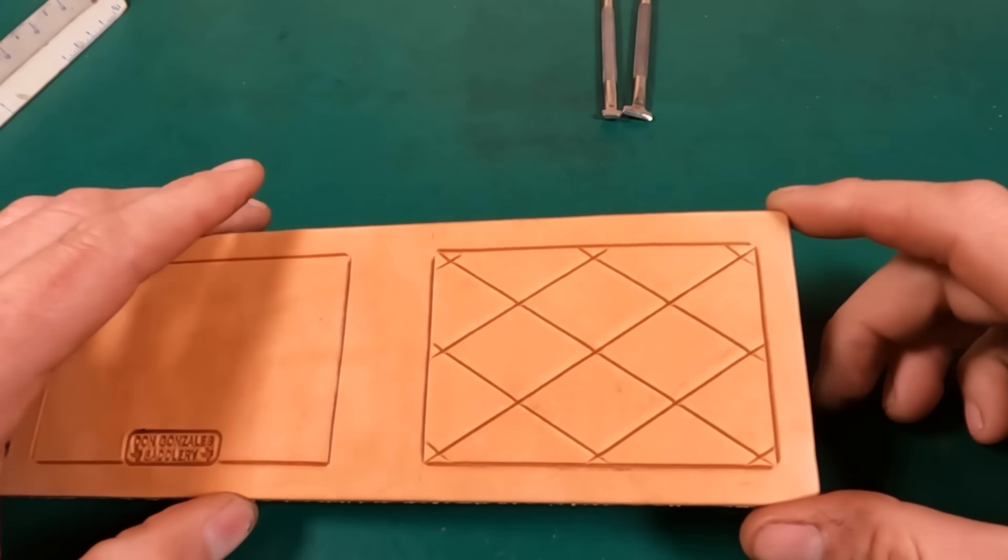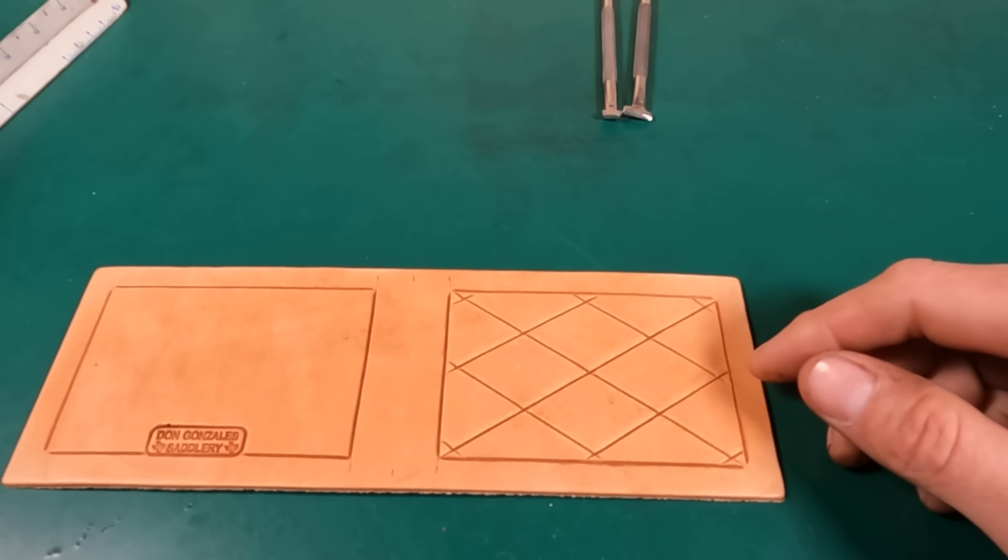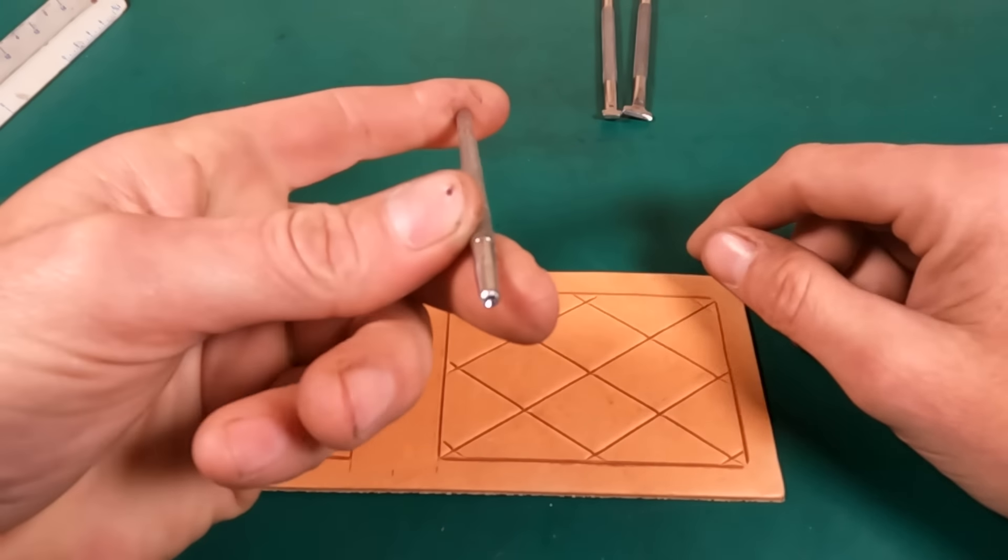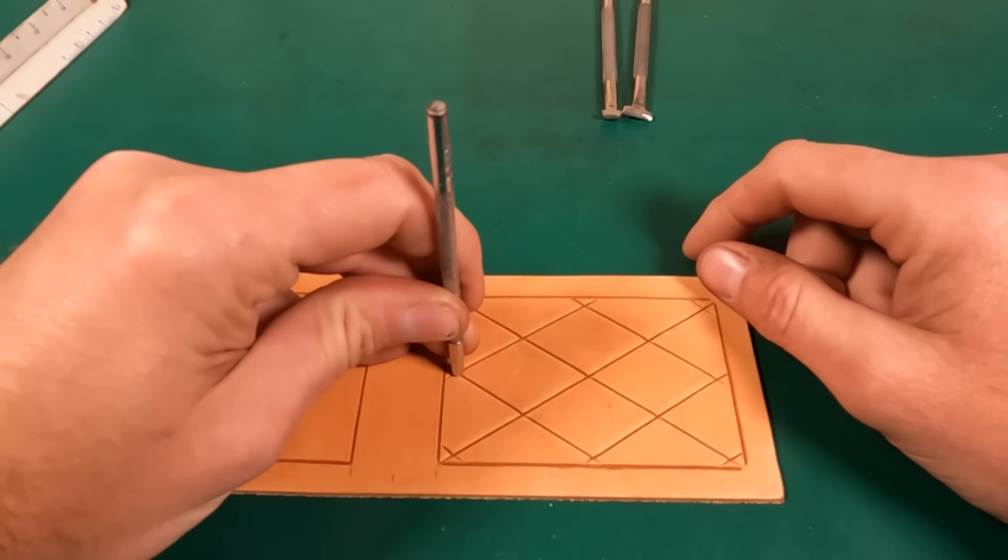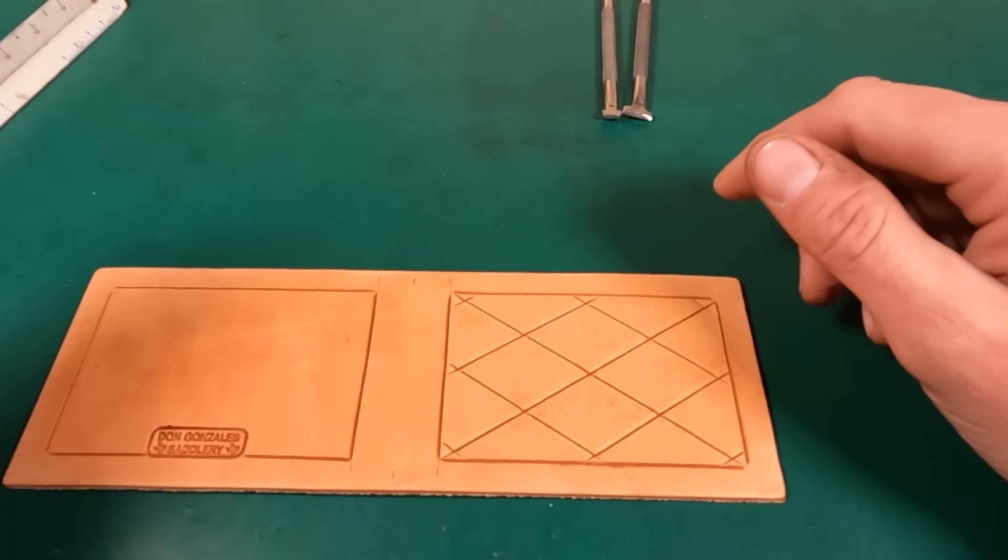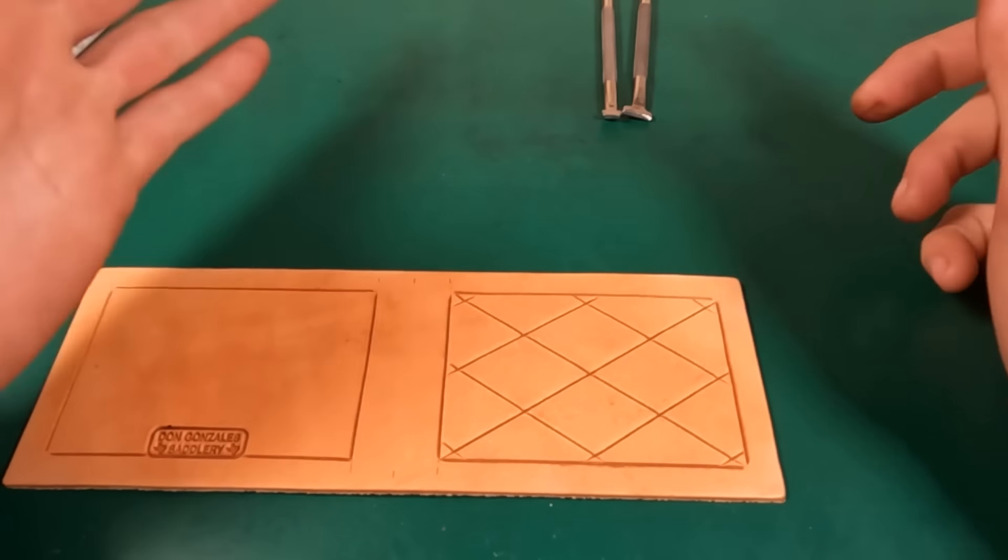Now if you want to do a quilting pattern, this would be the moment where you would take a seed tool of your choice, whatever seeder you like, and put one in each one of those intersections. And that's it. That's a very nice, clean, simple pattern that covers a blank area really nicely and looks real attractive.